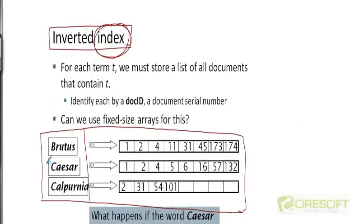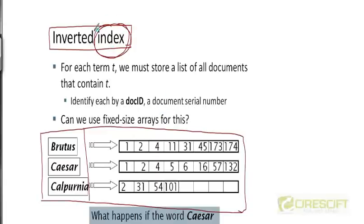This brings us to the notion of an inverted index, which is at the heart of information retrieval. An inverted index is the structure we just came up with: for each term t, we store a list of all documents that contain t, using unique doc IDs. Most often this is simply called an index or a search index. When the word 'index' appears in the context of an information retrieval system, it means an inverted index. Note that a database index is a different concept and should not be confused with an IR index.